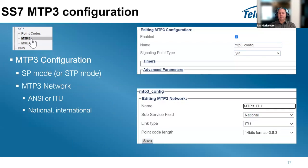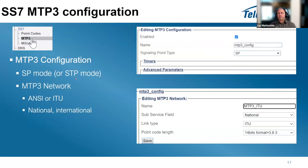In the MTP3 configuration section, give it a name, then select the signaling point type: SP/SSP for terminating traffic or STP for transfer-only mode. Next configure the link type - ANSI or ITU - and the service type such as national or international. These values are sent in MTP3 messages and must be correct; when you view traces in Wireshark you also need to specify the same information, otherwise the decode won't display correctly.